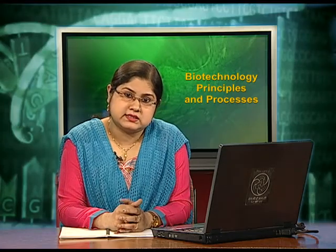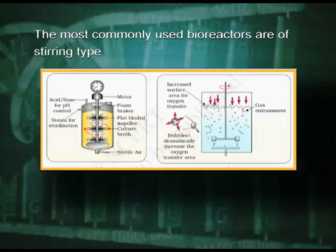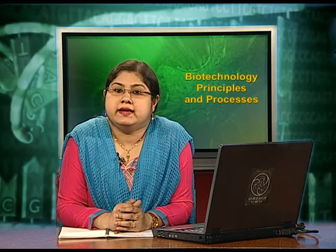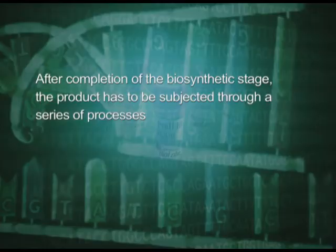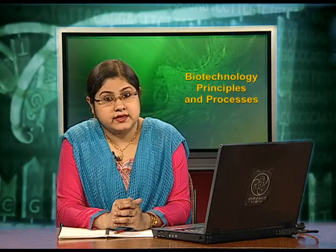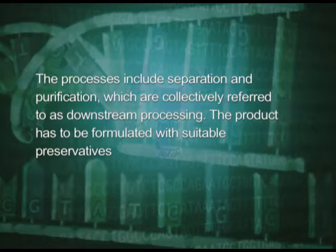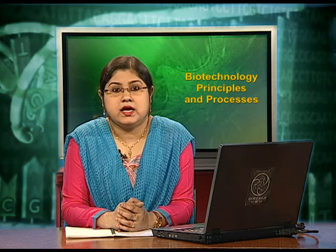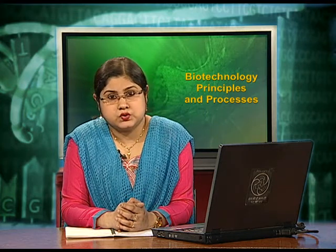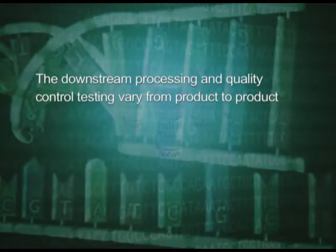The most commonly used bioreactors are of the stirring type, as shown in these figures. Finally, let us look at downstream processing. After completion of the biosynthetic stage, the product has to be subjected through a series of processes before it is ready for marketing as a finished product. The processes include separation and purification, collectively referred to as downstream processing. The product has to be formulated with suitable preservatives. Such formulation has to undergo clinical trials, as in the case of drugs. Strict quality control testing for each product is also required. The downstream processing and quality control testing vary from product to product.